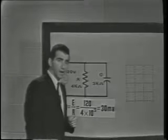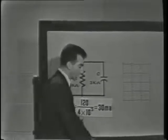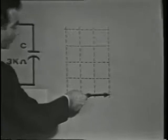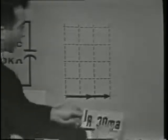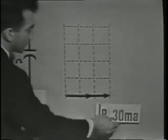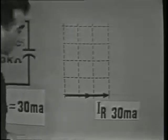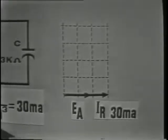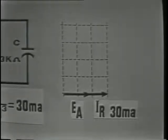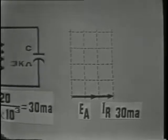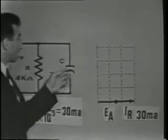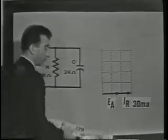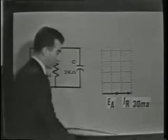The vector for IR will show the value of 30 milliamps on our graph. The 30 milliamps of resistive current must be shown in phase with EA since the resistor does not introduce a phase shift. The capacitive current, or IC, may be found in exactly the same way, simply applying Ohm's law.